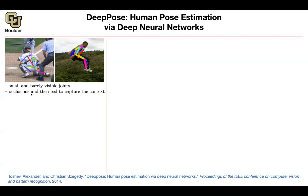This is a challenging problem because some joints are really small and barely visible — like the right wrist of this person. Also, your images could be highly occluded; for instance, the left side of this person's body is basically occluded. The neural network has to guess, just as a human would, where the left hand, left shoulder, and left knee are.